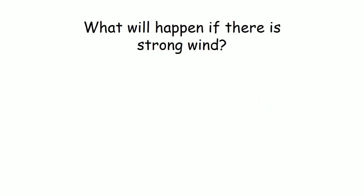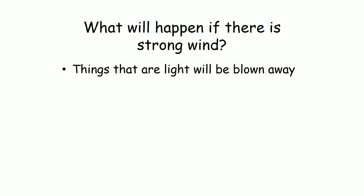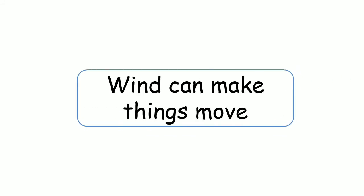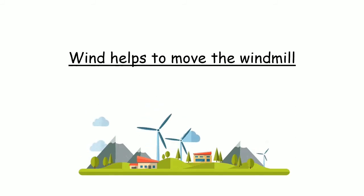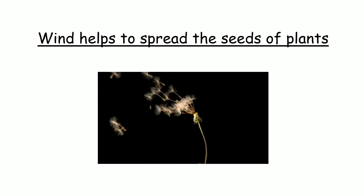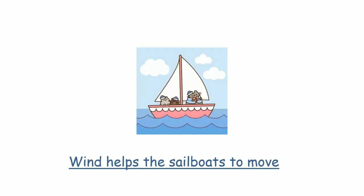What will happen if there is strong wind? Things that are light will be blown away, and we can fly kites or balloons. Wind can make things move. Wind helps to move the windmill, spread the seeds of plants, and helps sailboats to move.